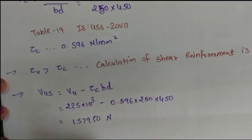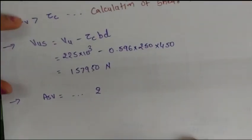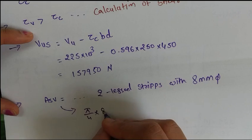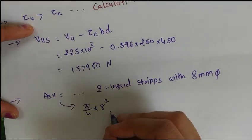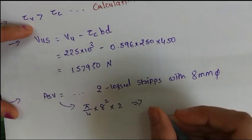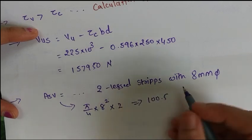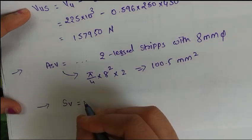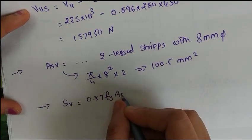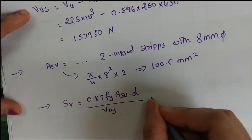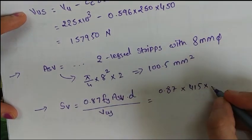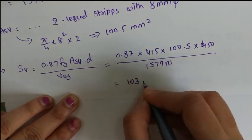Now we assume 2-legged stirrups of 8 mm bar diameter. ASV = (π/4) × 8² × 2 = 100.5 mm². We then calculate SV using the formula: SV = 0.87 × FY × ASV × D / VUS. The calculated value of SV is 103 mm.